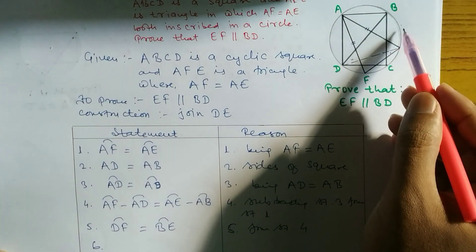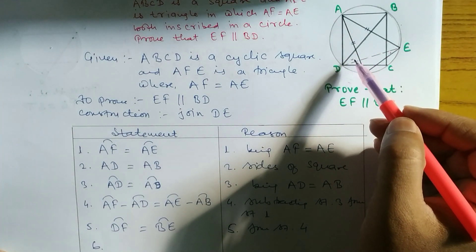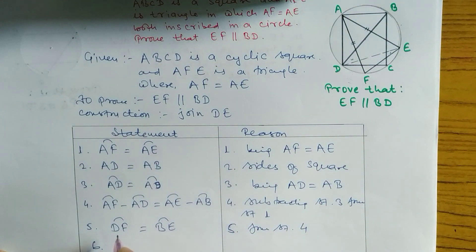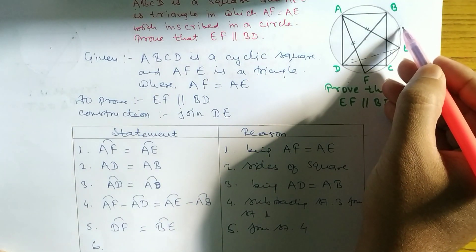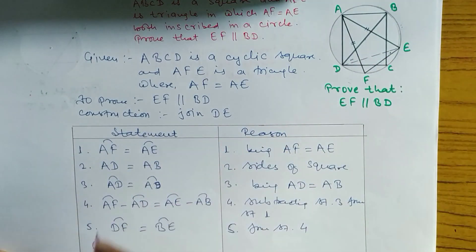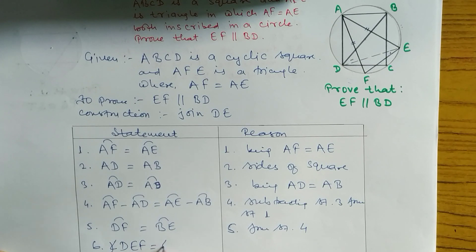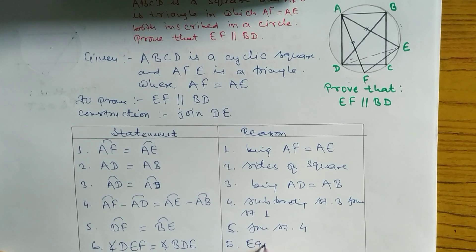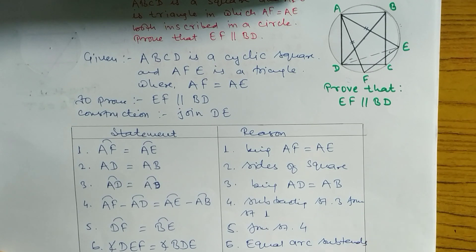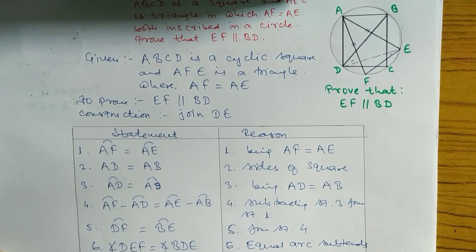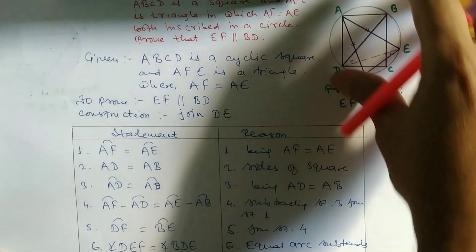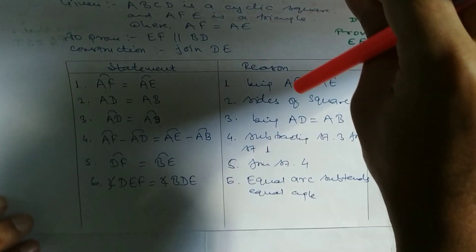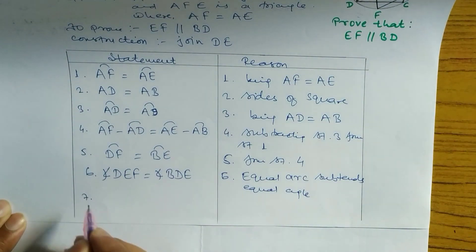From statement four, in step six: when arcs are equal, the inscribed angles subtending those equal arcs are also equal. So the angle in front of arc DF — which is angle DEF — equals the angle in front of arc BE — which is angle BDE. Therefore angle DEF equals angle BDE.